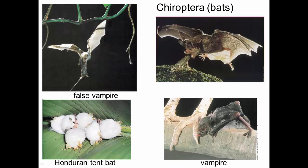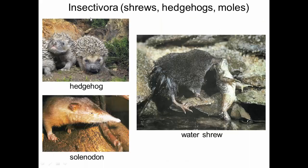Our second-to-last group are Chiroptera, or bats. They've evolved the ability to fly, but their wings are structurally quite different from birds' wings. Many are predatory, eating mice or frogs; vampire bats are parasitic. Some are just super cute, and there are a very large number of bat species.